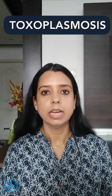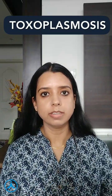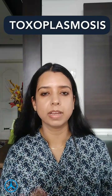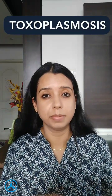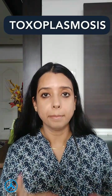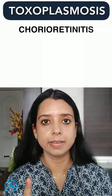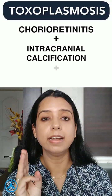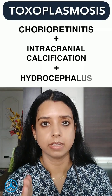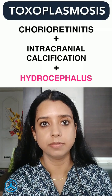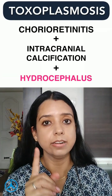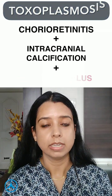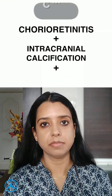Let's start with toxoplasmosis. Toxoplasmosis has general symptoms of hepatosplenomegaly, jaundice, and preterm birth, but there is a classic triad of chorioretinitis, intracranial calcification, and hydrocephalus. If hydrocephalus is given in a question, it is clearly indicating toxo infection.